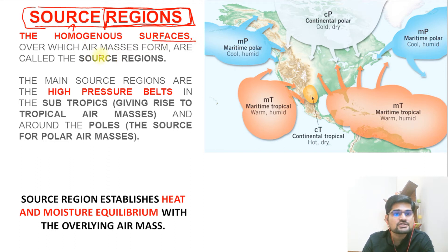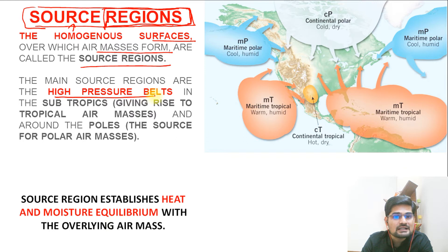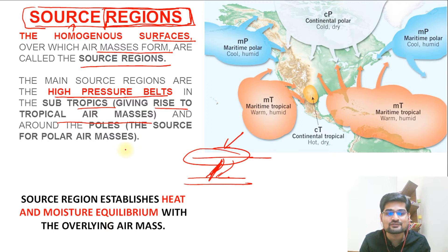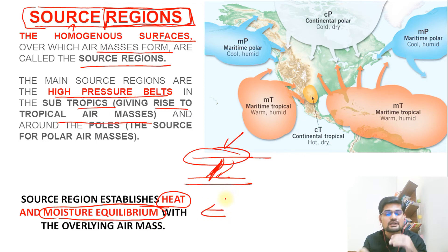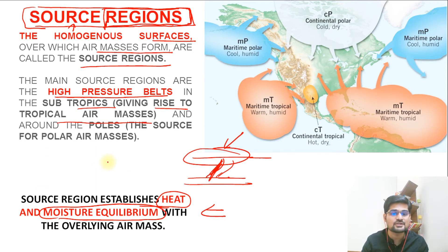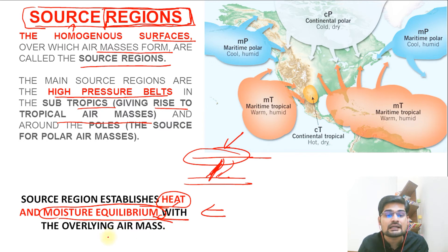The homogeneous surfaces over which air masses form are called source regions. The main source regions are high pressure belts in subtropics, giving rise to tropical air masses. From the subtropical to the tropics to the equatorial there is a flow — this is also where westerlies and trade winds form. The source region establishes heat and moisture equilibrium. Hot air has more moisture capacity, while cold air is dense and saturated with little space for more moisture. This equilibrium is why air masses are of a stable nature for longer time periods.